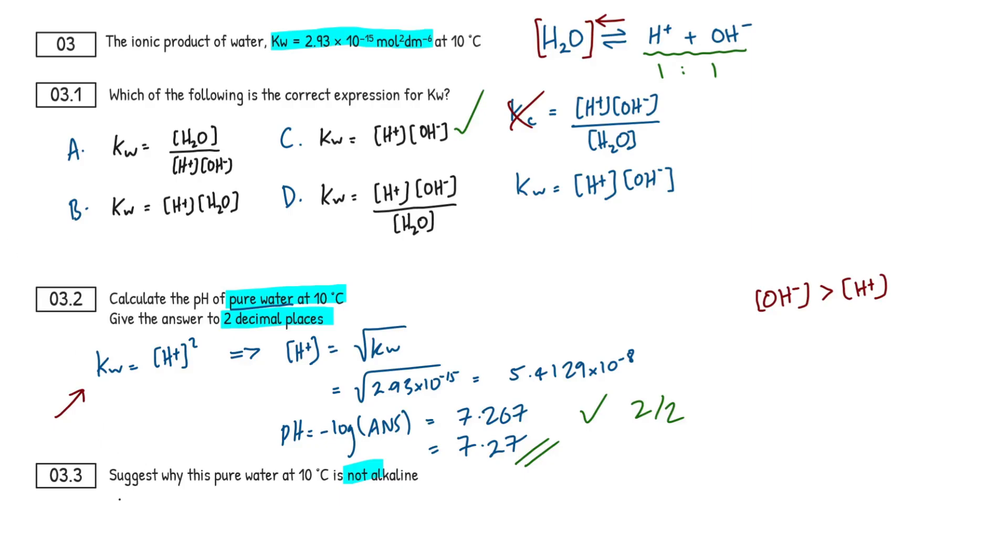So, for our answer here, if you look at the mark scheme, super simple response here. All you have to say is H plus concentration equals our OH minus concentration. So, if they're the same, it's going to be neutral. Because the H plus concentration is not greater, it's not acidic. And because the OH minus concentration isn't greater, it's not alkaline. Simple as that. Hopefully, that's an easy one marker for you guys to remember in case it pops up again. So, I'll tick that off.